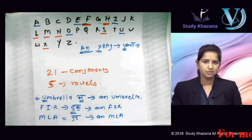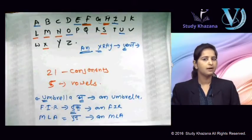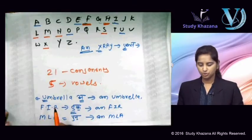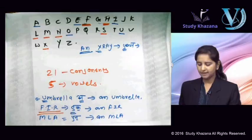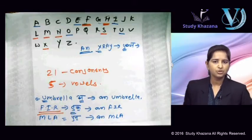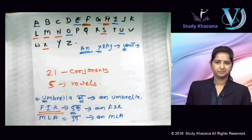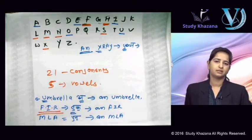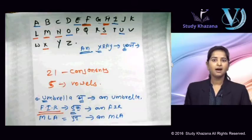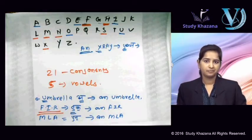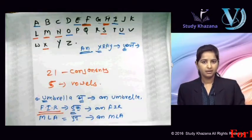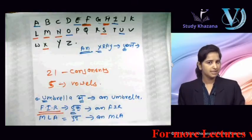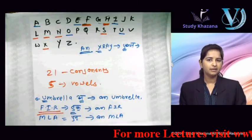Jahaan aapke pronunciation mein vowel ka sound hoga, wahaan hum 'an' article ka use karenge. For example, 'FIR' — iska pronunciation shuru ho raha hai 'ef' se — so 'an FIR.' Lekin agar koi kahe 'First Information Report,' toh kya hoga? Article 'a' — 'a First Information Report.' Agar koi kahe 'Member of Legislative Assembly,' article 'a' — 'a Member of Legislative Assembly.'